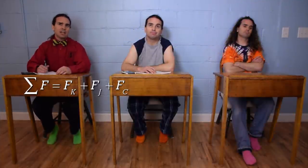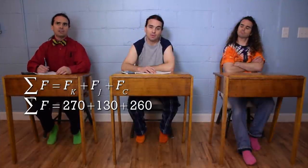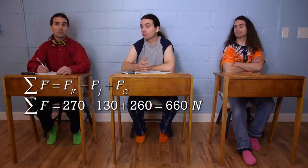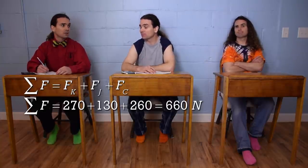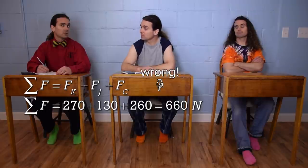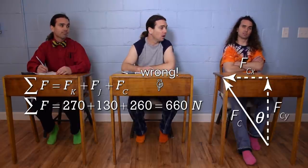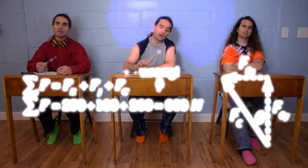Can't we just add 270 plus 130 plus 260 to get 660? If force were a scalar, we could do that, but force is a vector, not a scalar. We need to break the force of Chris into its components. Yeah, that's right.